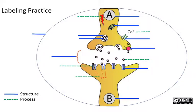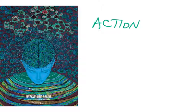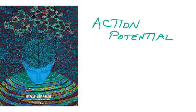I'm going to leave this diagram for you to label — the blue lines represent different structures and the dashed green lines represent processes. If you have questions, we can talk about it next week. The next lecture is going to take us into the wild world of the action potential — more about electricity coming up.